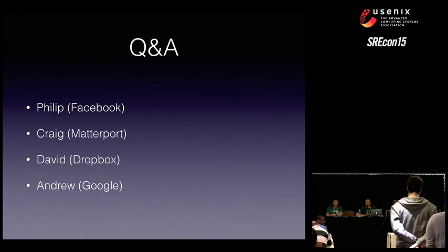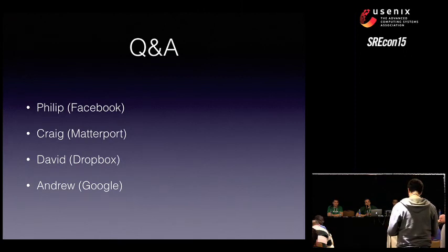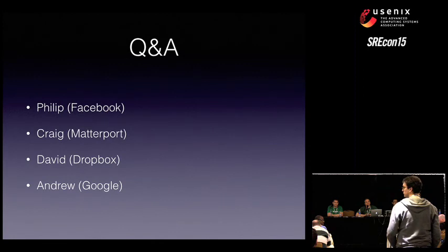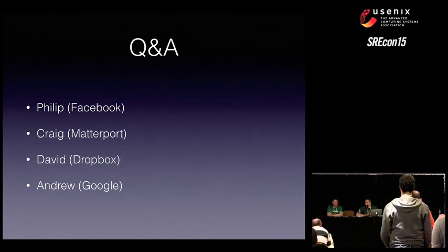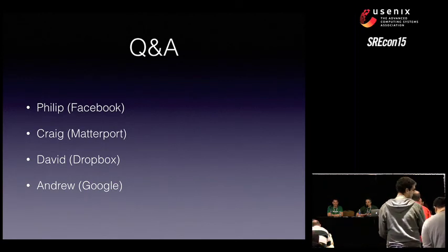My question is related to what Philip was talking about — sending all new engineers through a similar boot camp and then having them pick their teams. That's quite different from my experience at LinkedIn where we pre-allocate people into teams before they even set foot on campus. What happens if there are teams that just nobody wants to join? Or what if there's a 'cool team'? Is there any central supervision over that, or do you just let people go wherever?